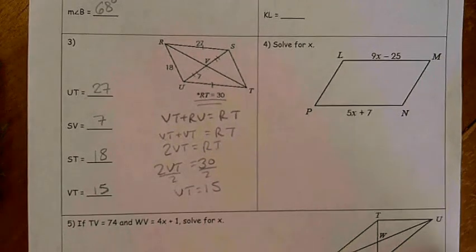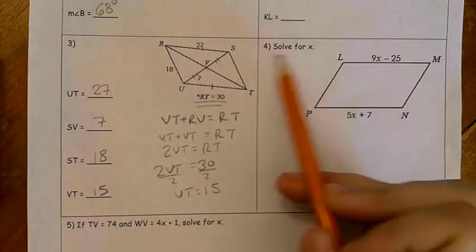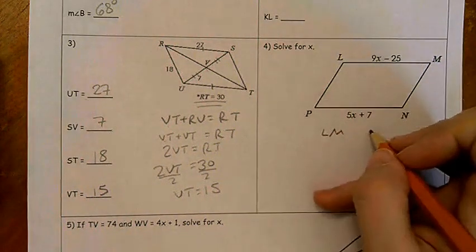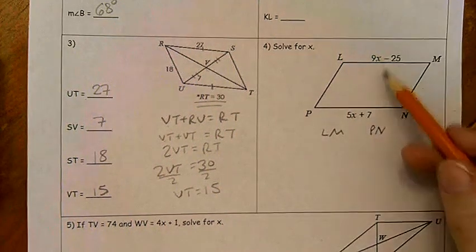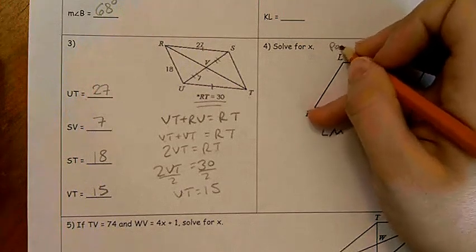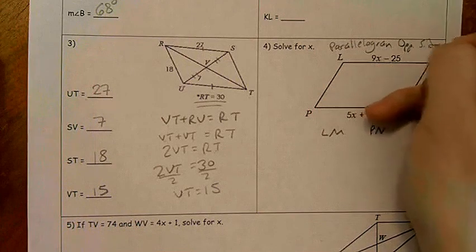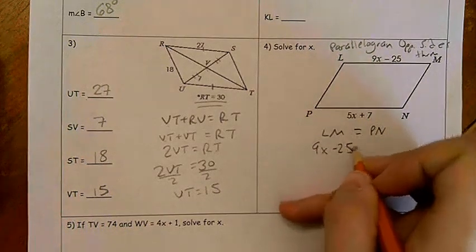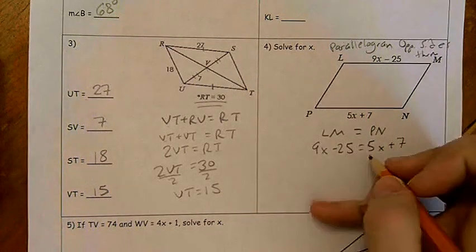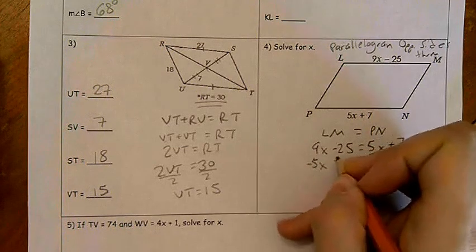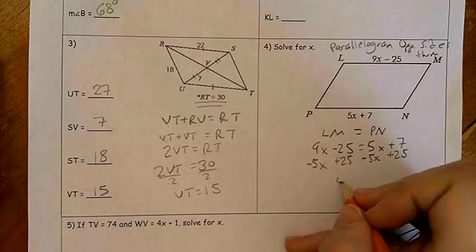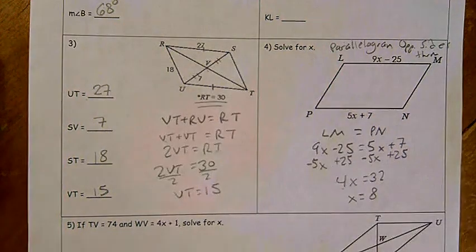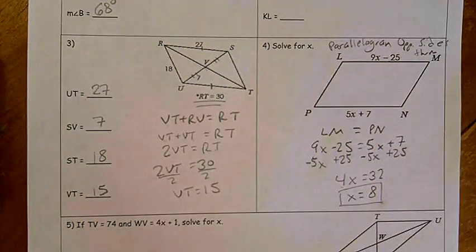Let's do one more example before I have you guys practice on your own a little bit. We're going to take a look at number 4. It says we want to solve for X. So we know LM is 9X minus 25, and we know PN is 5X plus 7. These are opposite sides. So by the parallelogram opposite sides theorem, I know that they're congruent to each other. So we have 9X minus 25 equals 5X plus 7. I'm going to subtract 5X on both sides. I'm going to add 25 on both sides. So I end up with 4X equals 32. When I divide 4 on both sides, we get X equals 8.